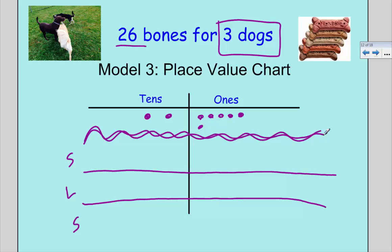When I look at my tens, I have two tens. Well, I have three dogs, so I can't evenly divide those two tens. What I need to do is unbundle them. I'm going to take this one ten and make a trade. I would like to stack them, but I didn't leave enough room, so I'm going to send this guy over here.